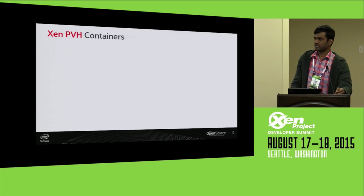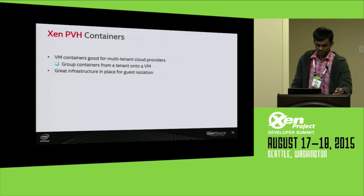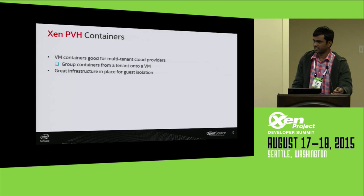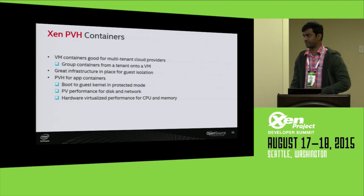How can we use Xen as the infrastructure or framework here? We can group containers from a single tenant onto a VM. Xen is already time-tested infrastructure. Now, why PVH? PVH is a good choice for application containers because it's about fast boot time — it directly boots the guest kernel, skipping the BIOS, and we get PV performance for disk and network. For CPU and memory, we use HVM extensions.